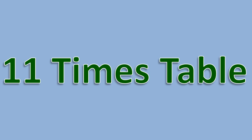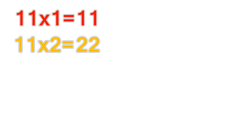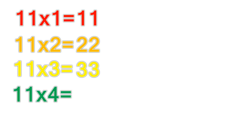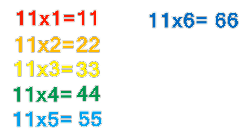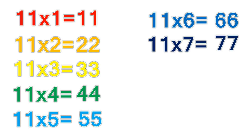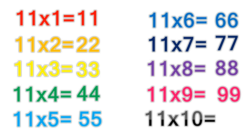11 times table. 11 times 1 equals 11. 11 times 2 equals 22. 11 times 3 equals 33. 11 times 4 equals 44. 11 times 5 equals 55. 11 times 6 equals 66. 11 times 7 equals 77. 11 times 8 equals 88. 11 times 9 equals 99. 11 times 10 equals 110.